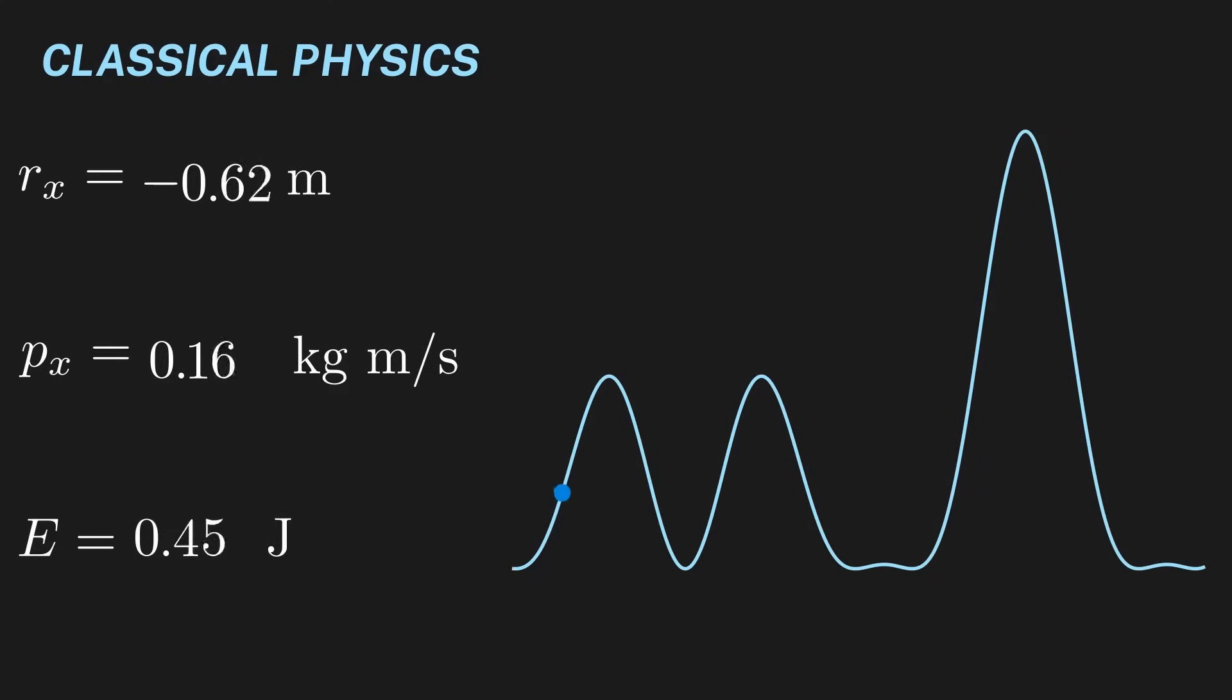First, let's review the basic mathematical model we have for classical physics. We know that a classical particle carries with it physical quantities, like position, momentum, and energy. As this particle moves in space and interacts with objects, we know that these quantities change continuously in time.